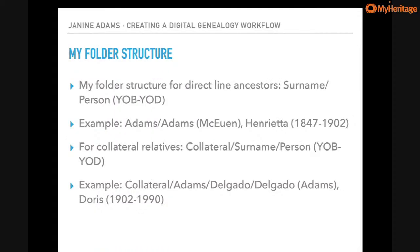Step seven: file the document. Before that, let me talk about my folder structure. My file naming protocol gives consistency in file names. For my direct line ancestors, I have a folder called Surnames. Within that folder, I have individual surname folders — Adams, Jeffries, Rasko, etc. Within each surname folder, I have a folder for the person with their name and years of birth and death.